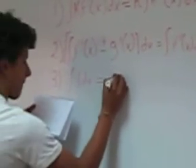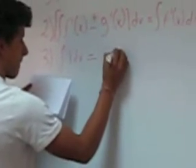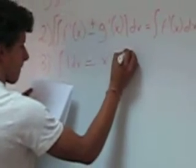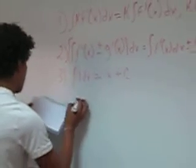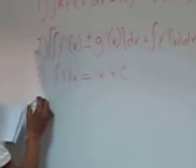The third rule is called the unit rule. This rule says that if you have a unit times dx, the integral of that is going to be x plus C.